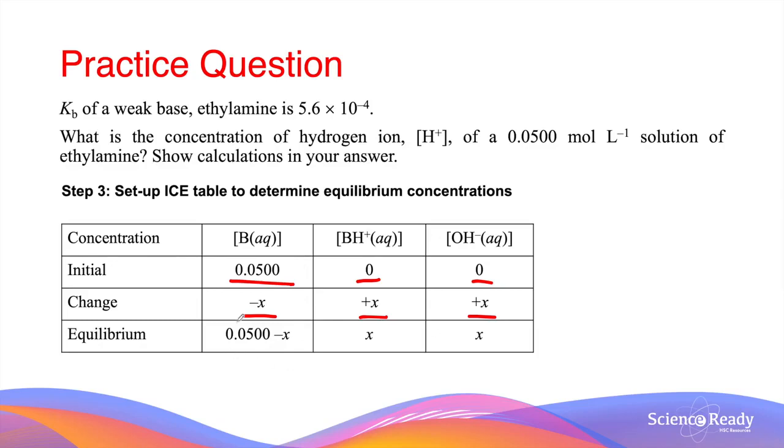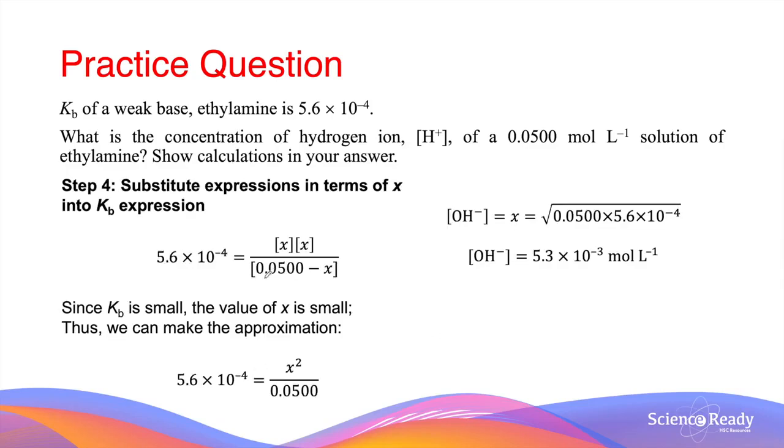By adding the initial and the change in concentration, we can derive expressions for our equilibrium concentrations. The next step is to substitute the expressions into the Kb expression using 5.6 times 10 to the minus 4 as our Kb value.